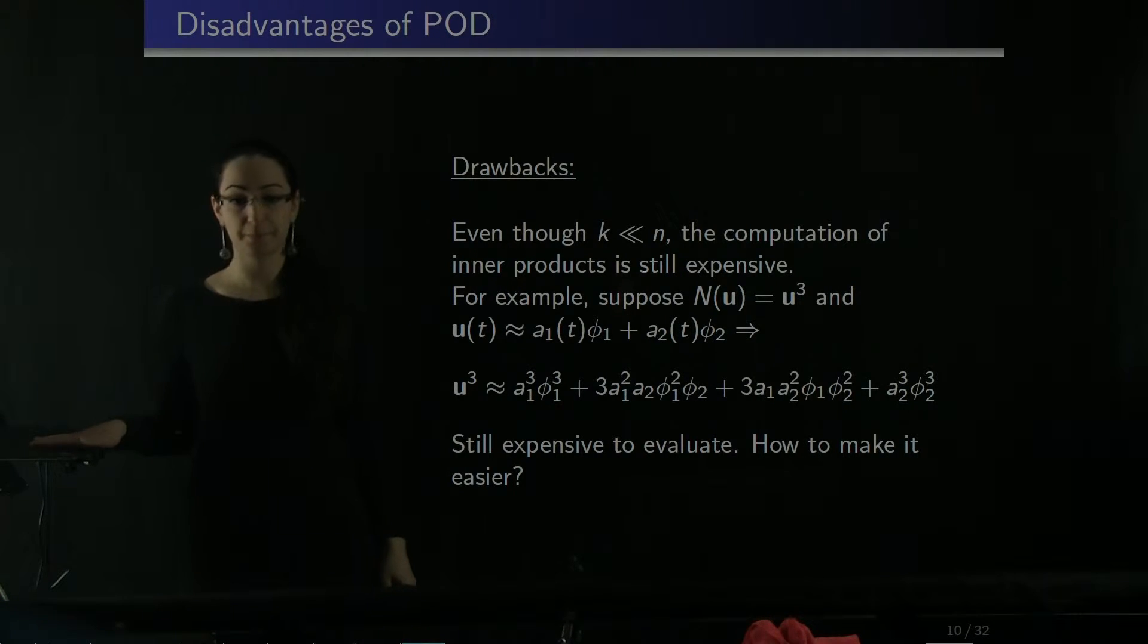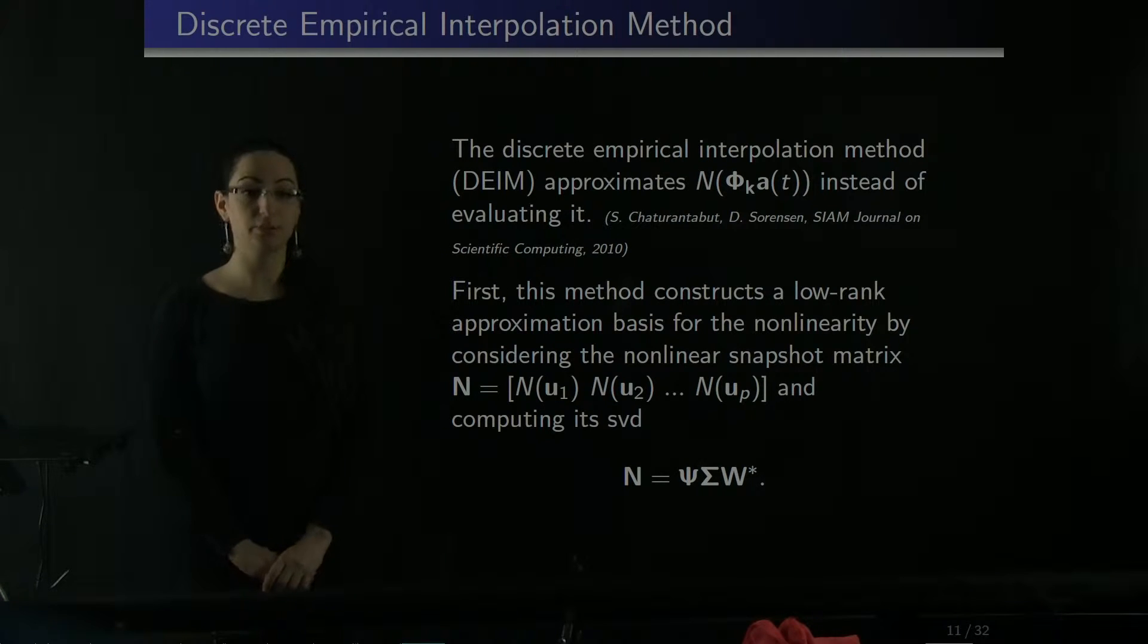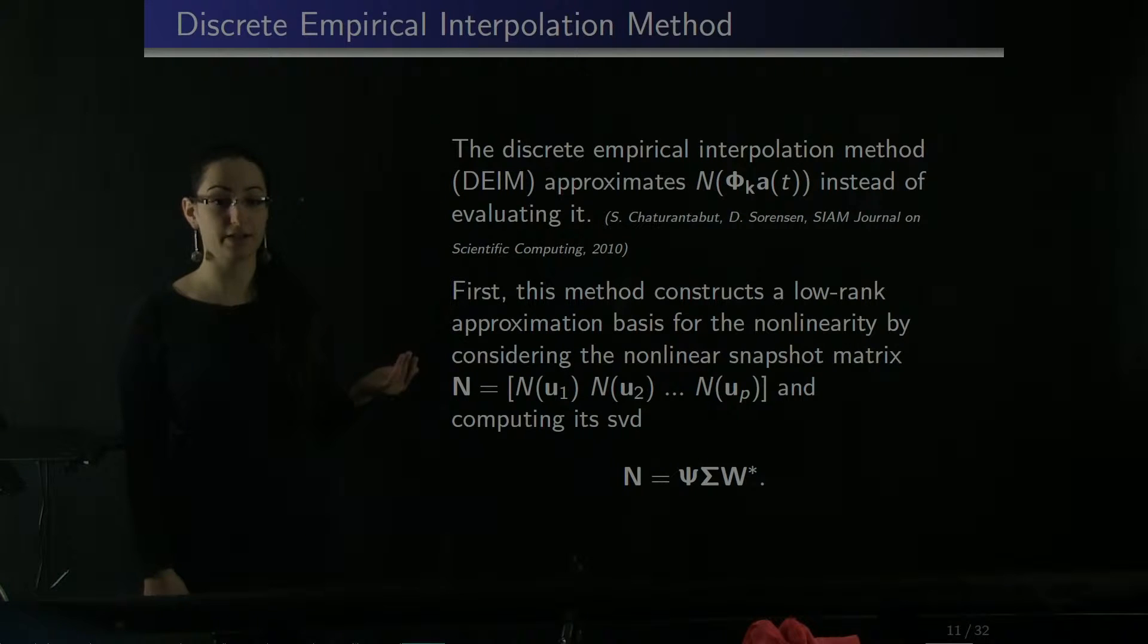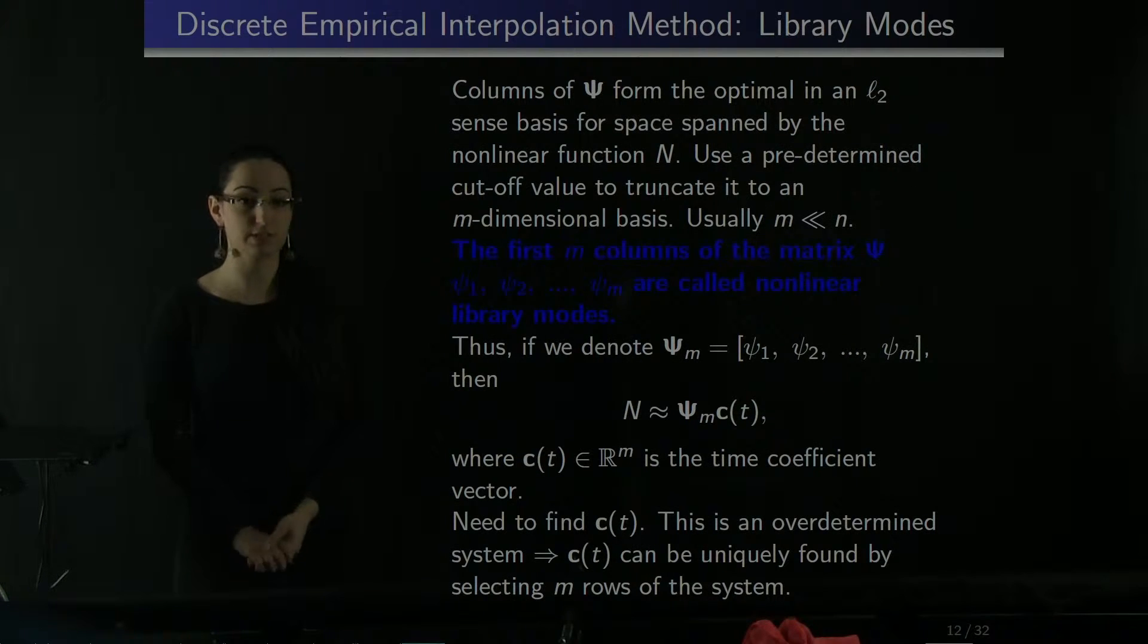What could we do to make this easier? Discrete empirical interpolation method suggests to approximate the nonlinear term instead of evaluating it. First, we construct a basis to approximate nonlinearity. We do that by first constructing a snapshot matrix for nonlinearity, then taking its singular value decomposition. As was discussed, the columns of psi give the best in an L2 sense approximating basis for function N. We'll call the columns of psi the nonlinear library mode. Usually, we use some cutoff criteria to pick the number of columns. In practice, that number is much smaller than the dimensionality of the function.